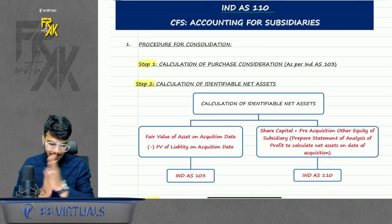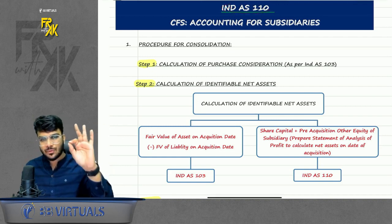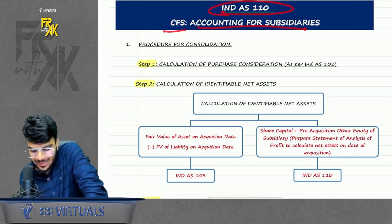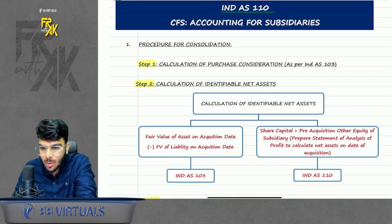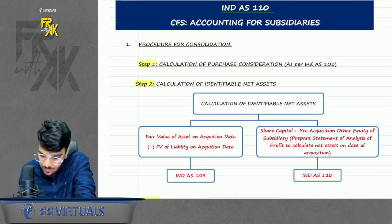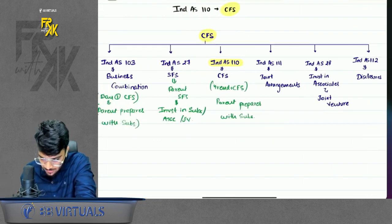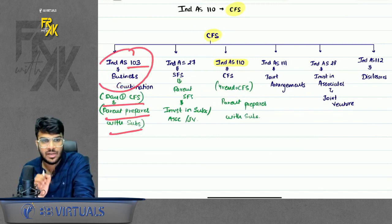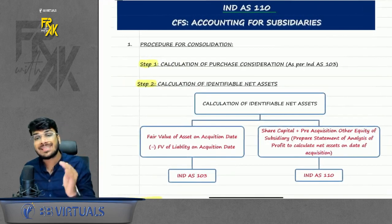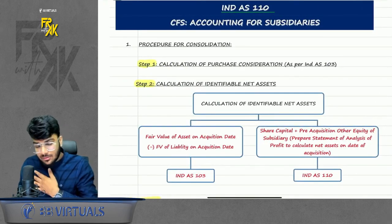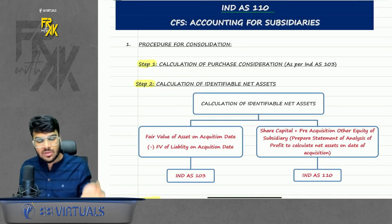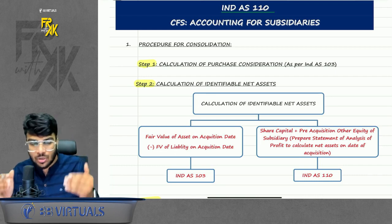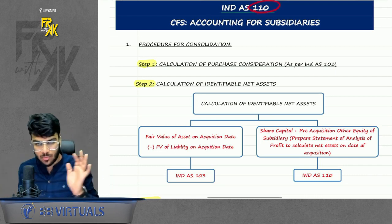Let's start the revision. IND AS 110 is named CFS — Accounting for Subsidiaries. It is a continuation of what we study in IND AS 103. IND AS 103 talks about CFS on Day 1 when you acquire control; IND AS 110 talks about CFS on year end. For example, if you acquired a company on 1st April 2012, on 31st March 2013 how will you prepare the CFS? That is what IND AS 110 covers.